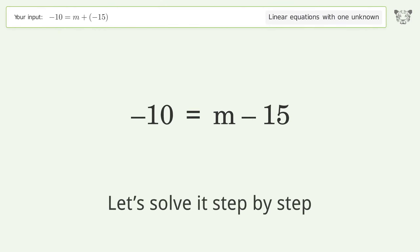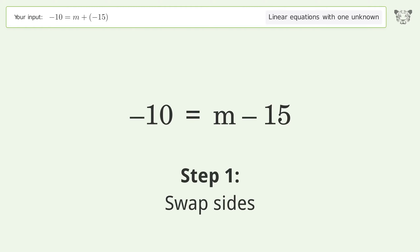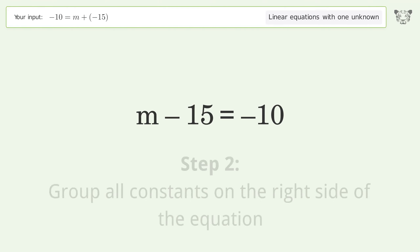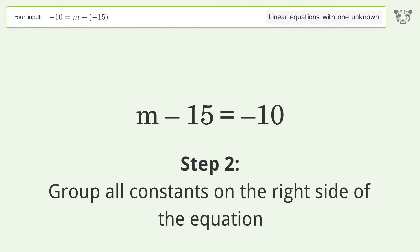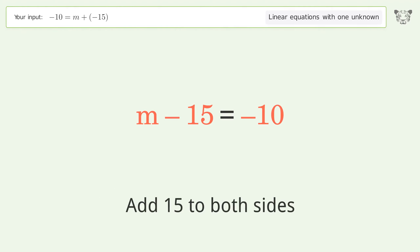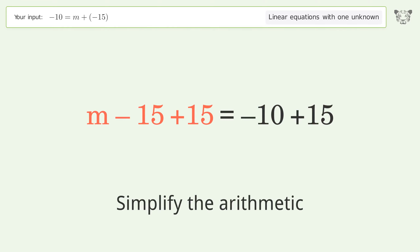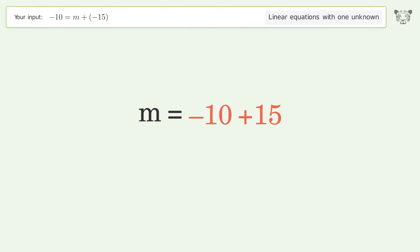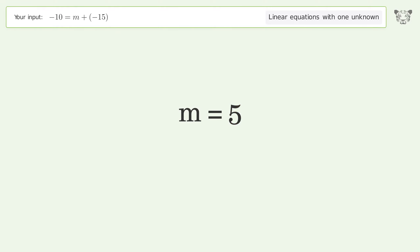Let's solve it step by step. Swap sides, group all constants on the right side of the equation, and add 15 to both sides. Simplify the arithmetic, and so the final result is m equals 5.